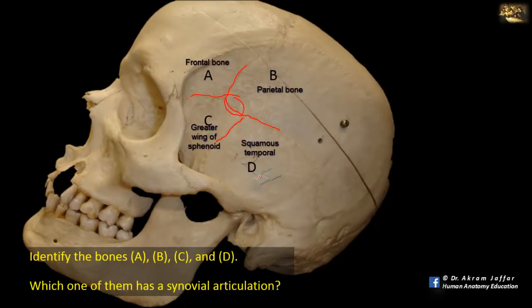Which one contains a synovial articulation? It is D, the temporal bone, because here it articulates with the head of the mandible at the temporomandibular joint. It should also be borne in mind that within the petrous portion of the temporal bone there are three ossicles — the malleus, incus, and stapes — which articulate with each other by two synovial joints. Located in the middle ear, their movements transmit and accentuate the vibrations of the tympanic membrane into the oval window, which is why they articulate by synovial joints.